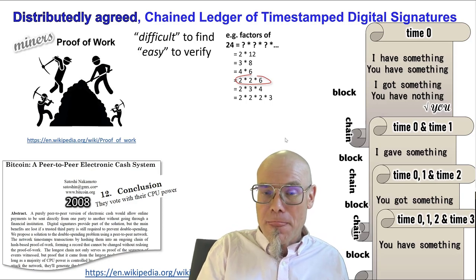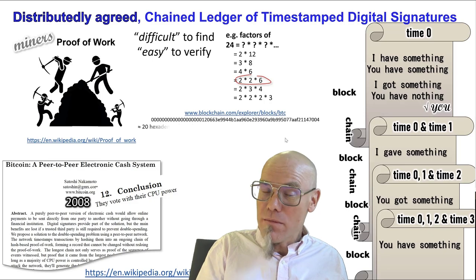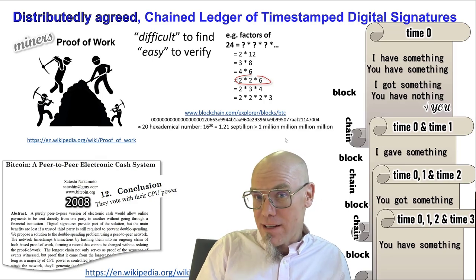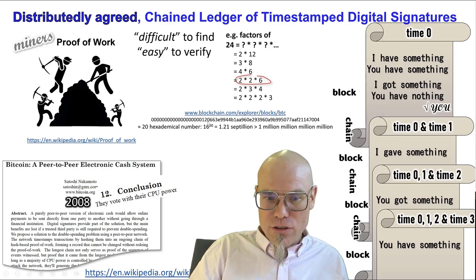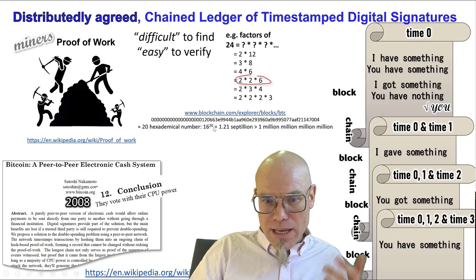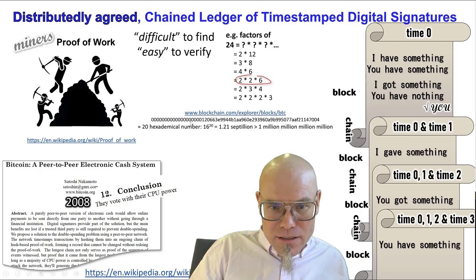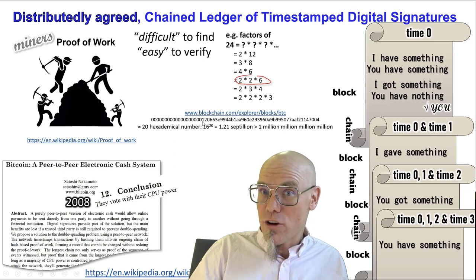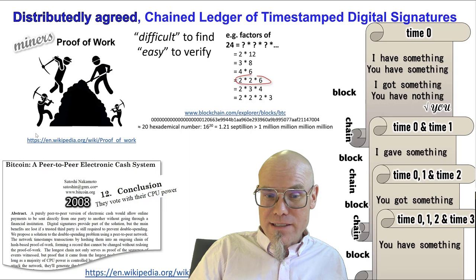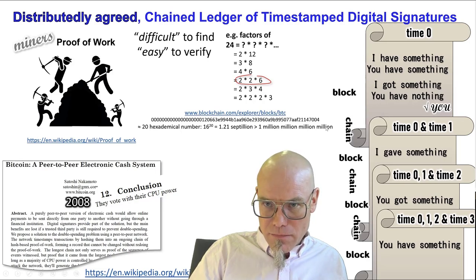We solve a mathematical problem. The solution usually has to start with a lot of zeros. Right now in the Bitcoin blockchain, you have to find a number with 19 or 20 zeros at the beginning. And the chance that you find that is 1 million, million, million, million to 1.